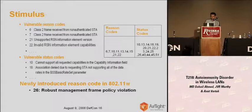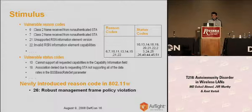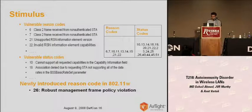Here is a new member of this family. The .11w latest standard has introduced one more reason code saying: robust management frame policy violation. So what you have to do is send a packet which violates the robust management policy of that network, and that network will send a de-authentication message with this particular reason code — if the access point is actually implementing these reason codes in the software. It's very easy to inject different stimuli in the network.